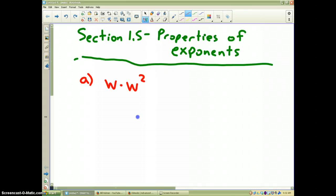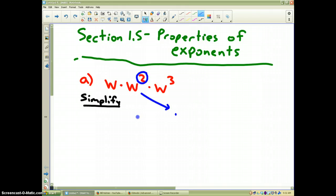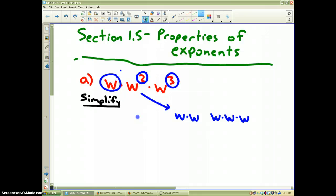Let's say I have in problem number 1 w times w squared times w to the third and the directions are to simplify. Well, if you recall from example 1, if we have a square, that means w times w. If we have a cube, that means w times w times w. And then of course, this first one right here is w to the first power, so I'll just put that in front.